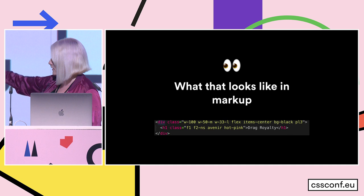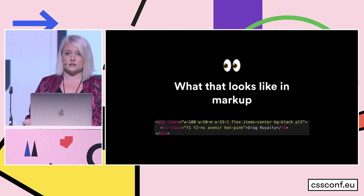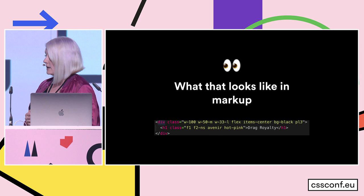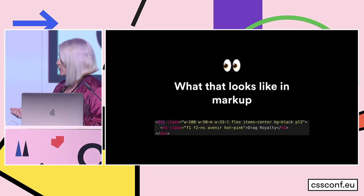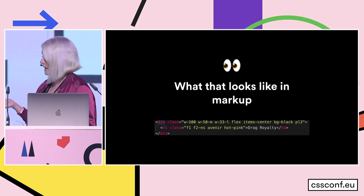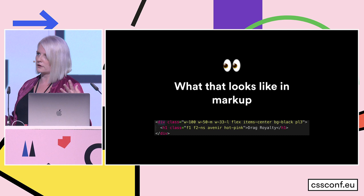So in case you can't see, this div has W100, which means width 100. W50M is a media query, so on a medium-sized screen it's going to be 50% width. W33L is going to be 33% width on a large screen. Flex is display flex, item center is align items center, BG black is background black, and PL3 is padding left three. You compose all these things together to create the UI.